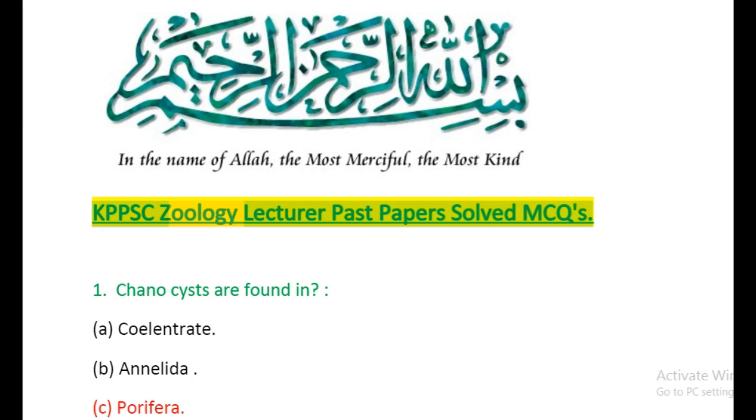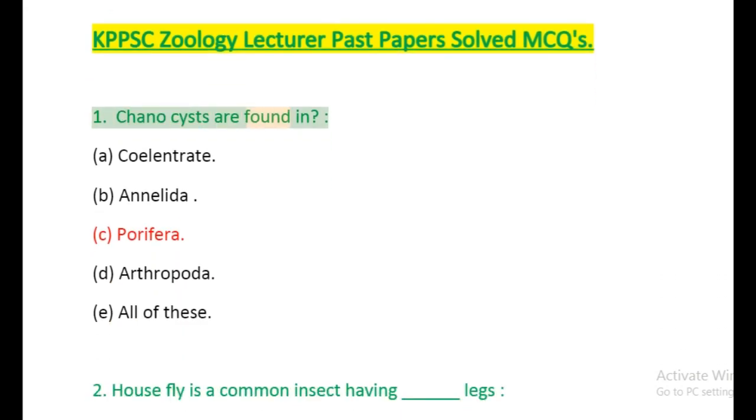KPPSC Zoology Lecturer Past Papers Solved MCQs. Question 1: Choanocytes are found in: (a) Coelenterate, (b) Annelida, (c) Porifera, (d) Arthropoda, (e) All of these.